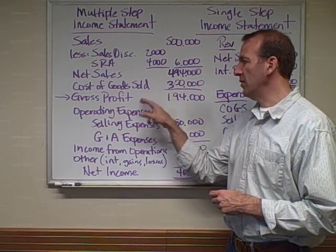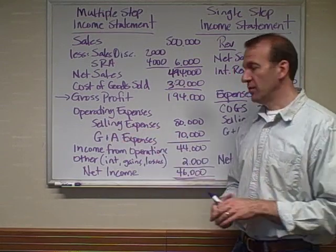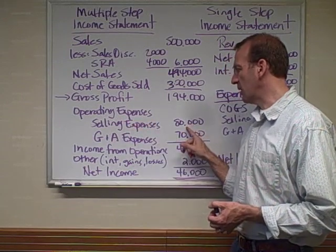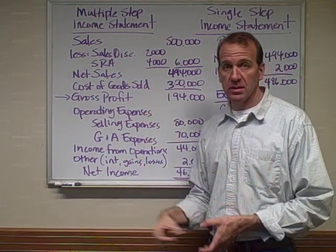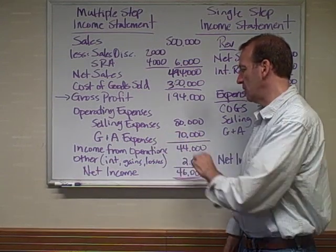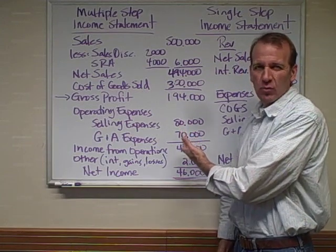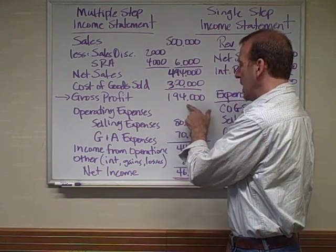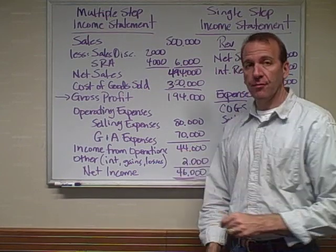Now we have additional expenses: selling expenses and general and administrative expenses. Sometimes businesses detail these out further, and sometimes they lump them all together as selling, general, and administrative expenses. Here I put total selling expenses of $80,000 and total general and administrative expenses of $70,000, so these two together total operating expenses of $150,000. I didn't have room to put that subtotal in, but many businesses will. So $194,000 minus $150,000 gives us income from operations of $44,000.